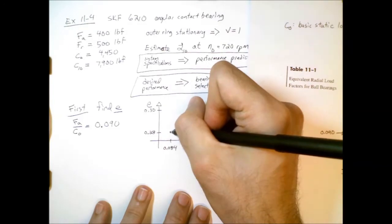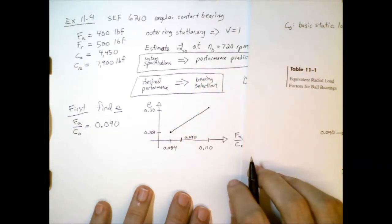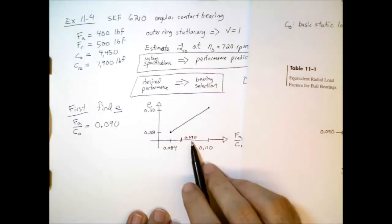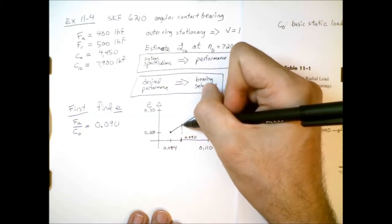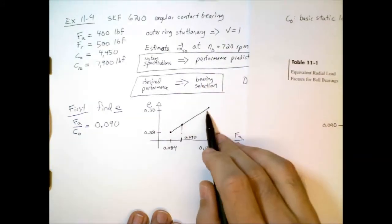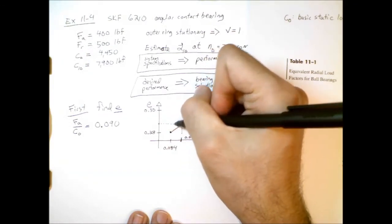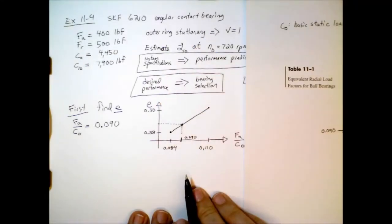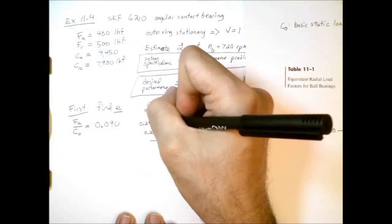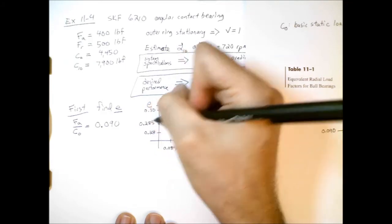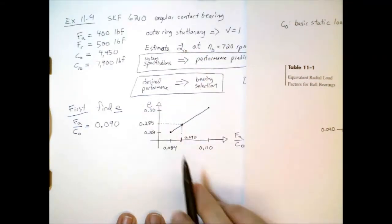So if we assume that a line is a good approximation of the function we're trying to approximate here, then we can do simple linear interpolation to come up with an estimate for the value of E based on this ratio of axial force to basic static load rating. So the basic idea here is with linear interpolation, we just draw a line and intersect with the line that connects these two data points and then see what value of E that corresponds to. So if we go through the calculations, it turns out it is 0.285, closer to 0.28 than to 0.3.